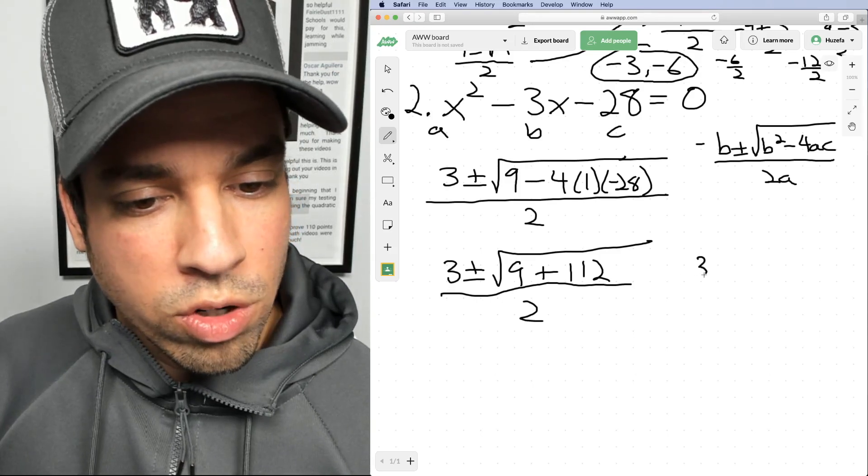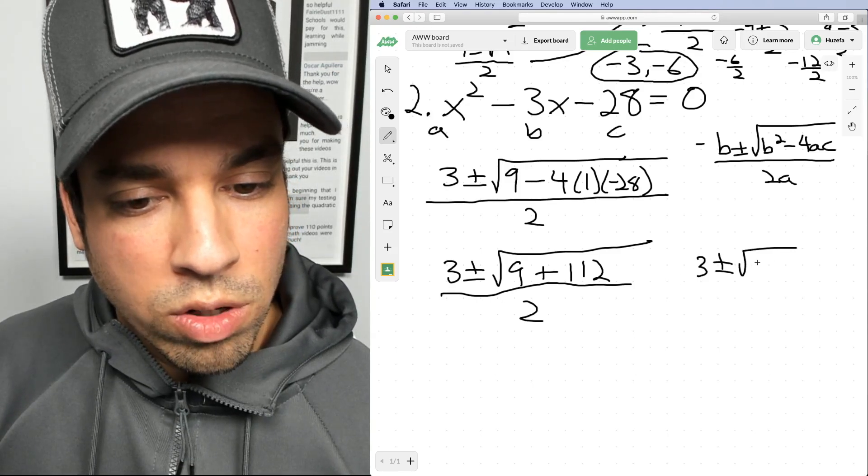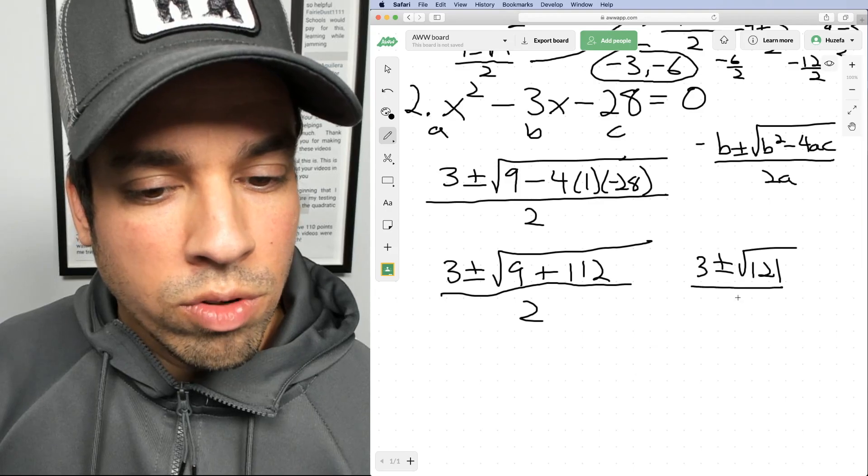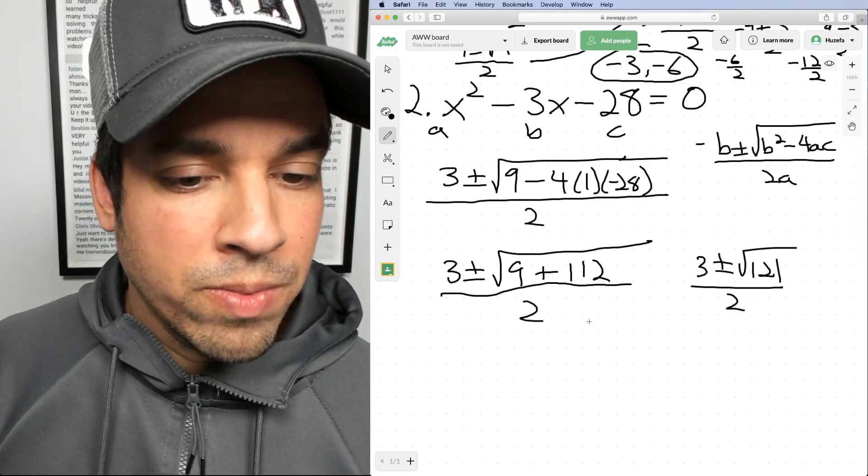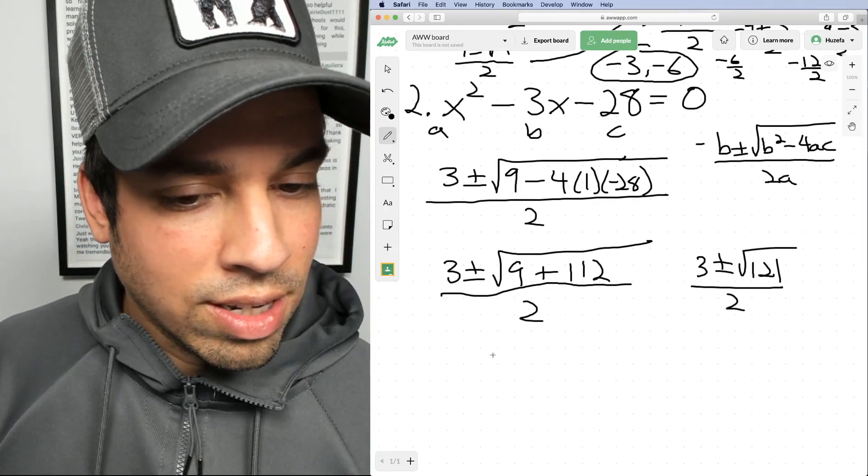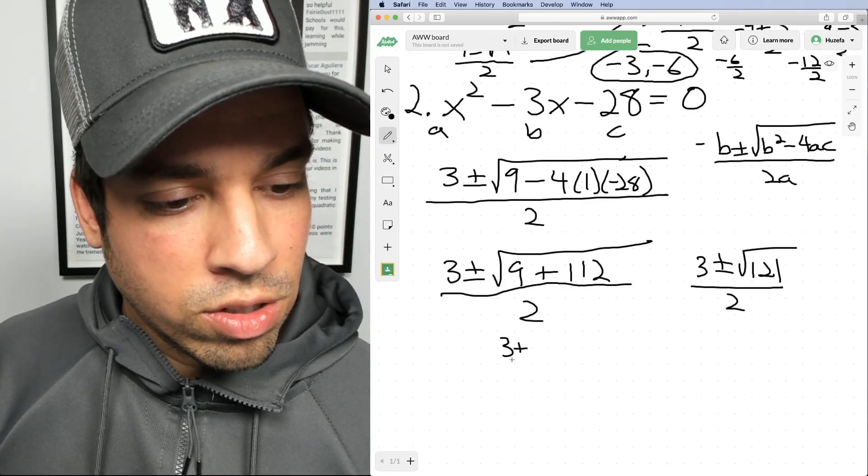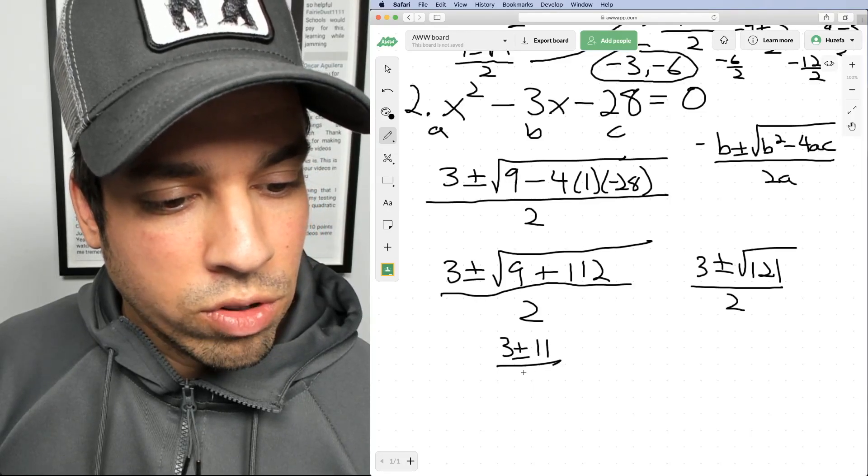All right, what's nine plus 112? That's 121 plus or minus 121 over two. Now that's a perfect square. So square root of 121 is 11. So this becomes three plus or minus 11 over two.